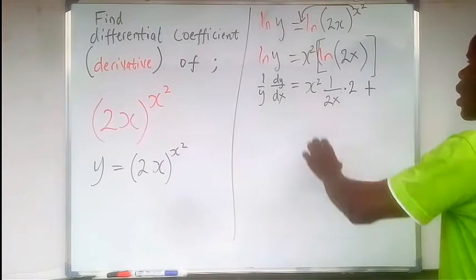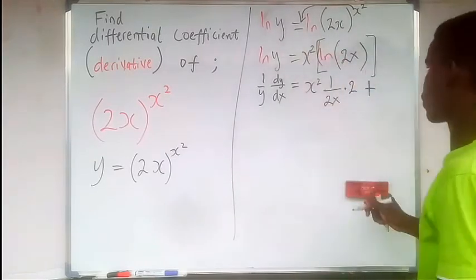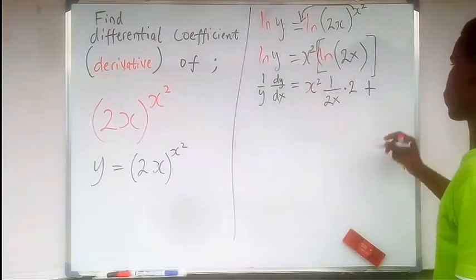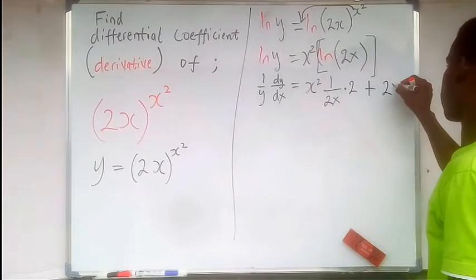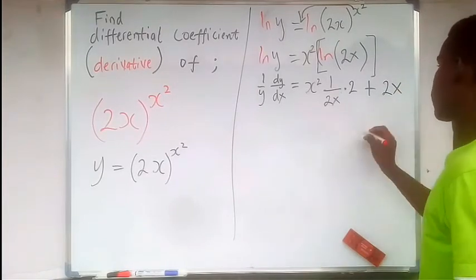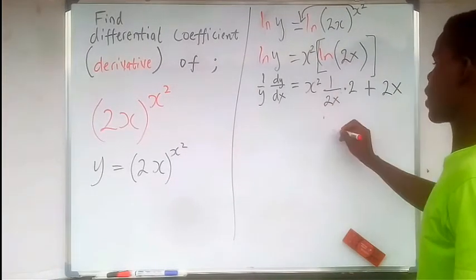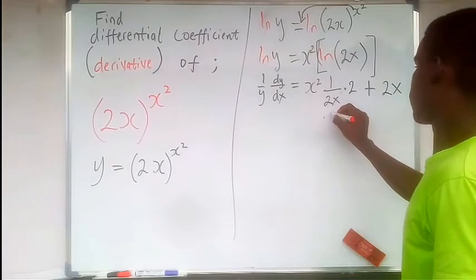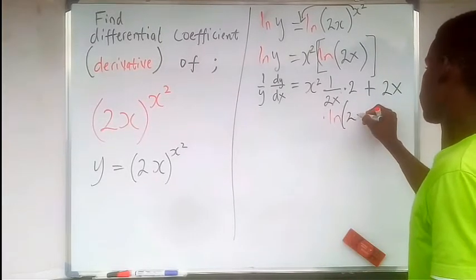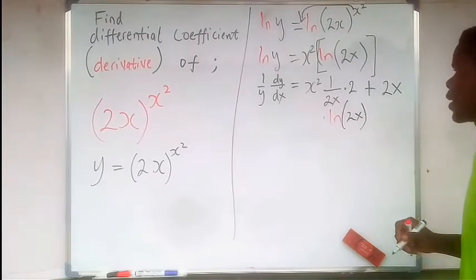Taking the product, we go further to addition. Now we differentiate this and keep this. So the derivative of x² is just 2x, times this man we just keep it there - ln of 2x.